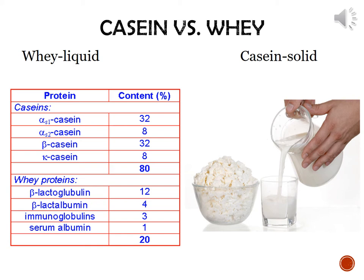To separate whey and casein from milk you can add heat or add an acid; salt will also help that process but is not quite as effective. Whey is actually much more quickly digested by the body and considered more efficient. There's been a lot of research by bodybuilders looking at whether whey is more effective at building muscle, but research shows that even though whey is absorbed much quicker than casein, they are about equally as effective at building muscle and increasing performance.